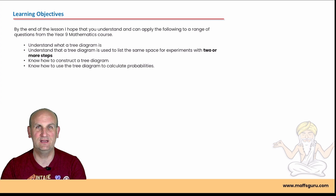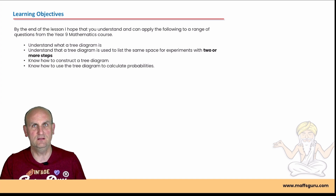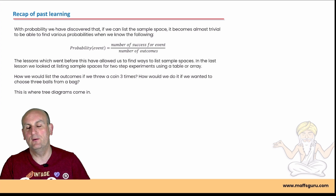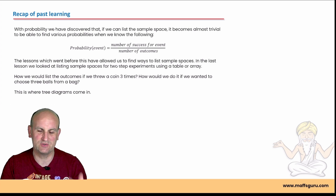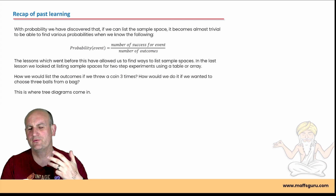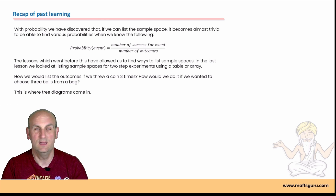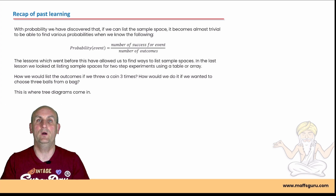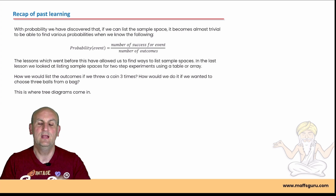That seems fairly straightforward. I do this at the start of the video because it's always good to know where we're going, and then by the end we can check whether we understood it all. In previous videos we've gone through basic probabilities, Venn diagrams, two-way tables, and arrays or tables to show multi-stage experiments. If you haven't watched those, they're on Mathsguru, and you can download the notes for this video there too.